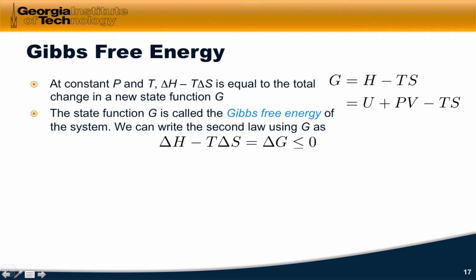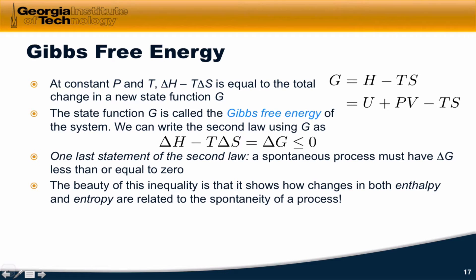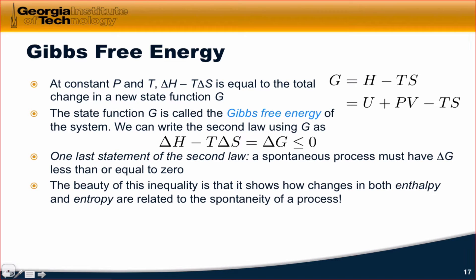We can then write the second law as delta H minus T delta S, which equals delta G, and this must be less than or equal to zero for any spontaneous allowed chemical process. The beauty and power of this inequality is that it shows how both enthalpy and entropy play into spontaneity for a chemical process. Delta G less than or equal to zero is the fundamental criterion. Delta H less than zero is favorable since delta H and delta G are directly related.